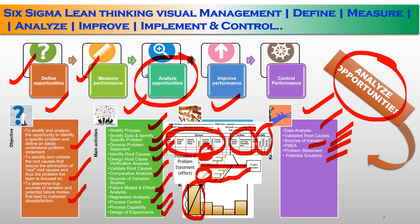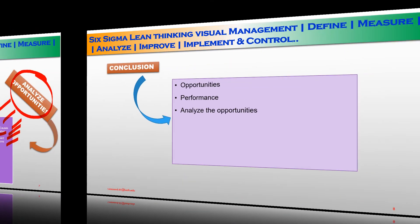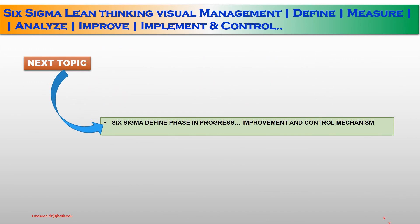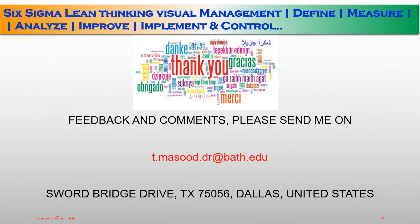This was the last slide for today. On the next lecture, we will discuss improvement performance and control performance. Today we discussed only three topics: first, define the opportunities; second, how to measure the performance; and third, how to analyze the opportunity in order to improve and control business performance. My next discussions will be on improvement and control mechanisms. Thank you very much for your precious time — please stay at home, stay safe, stay inspired, and blessed.